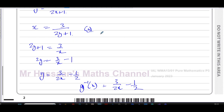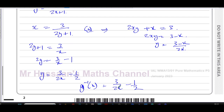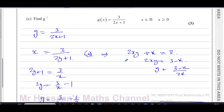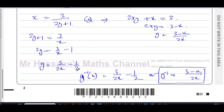Alternatively, starting from 2xy + x = 3, we get 2xy = 3 − x, so y = (3 − x)/(2x). This is the same answer written as a single fraction — combining 3/(2x) − 1/2 over common denominator 2x gives (3 − x)/(2x). Both forms are perfectly correct. If the question had said 'express as a single fraction,' then (3 − x)/(2x) would be the required form.